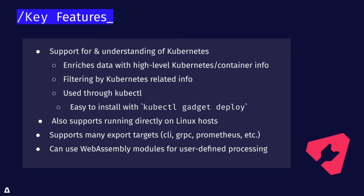Kubectl gadget is actually a plugin which you can install with Krew, and you just run deploy and it'll put it in your cluster. It also supports running directly on a Linux host, so you don't have to have Kubernetes. This is a very powerful feature because sometimes you might be running Kubernetes but you want to debug Kubernetes, and this direct Linux support allows you to get underneath the API server.